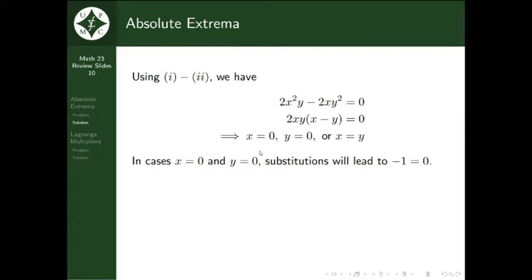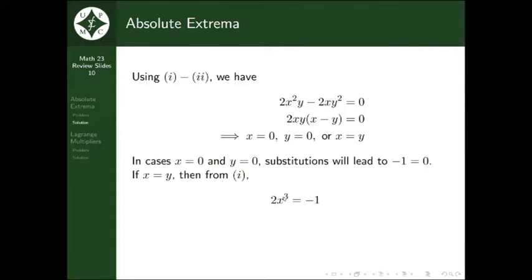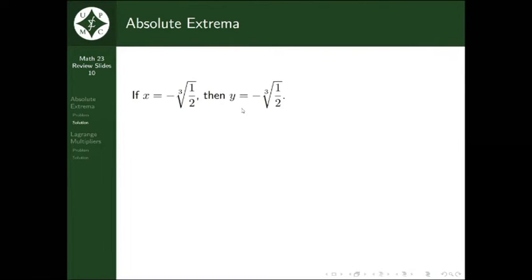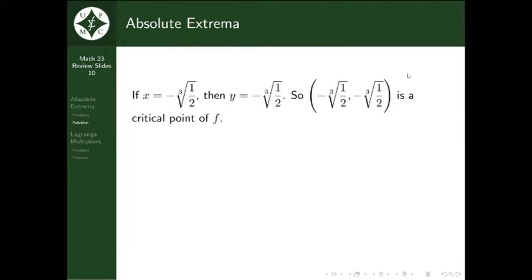These invalid candidates are called extraneous solutions, which can occur with systems of equations — that's why it's important to check all solutions against the original equation. For x = y, substituting gives 2x³ = -1, so x = -∛(1/2), and since x = y, we get y = -∛(1/2). This is our first critical point, and thankfully it lies within the region. Critical points outside the region must be discarded.